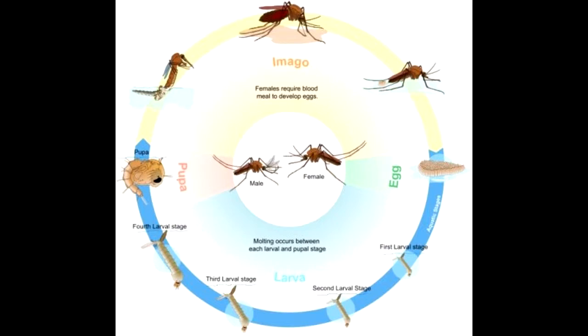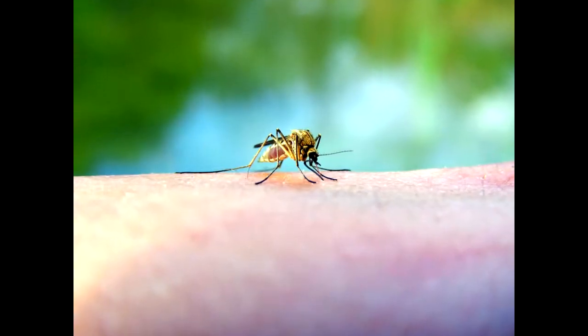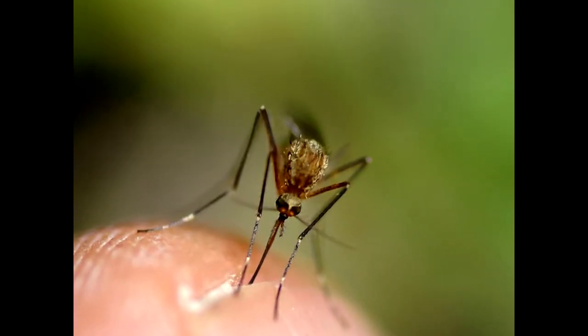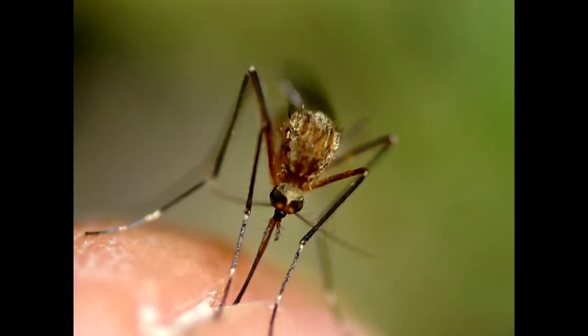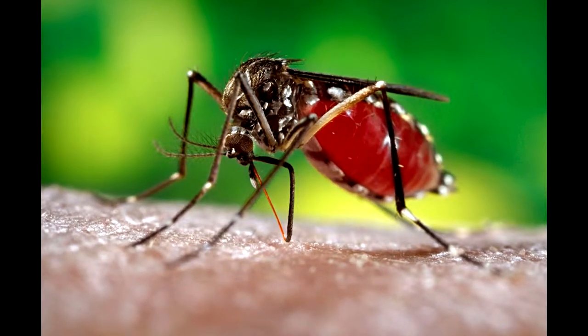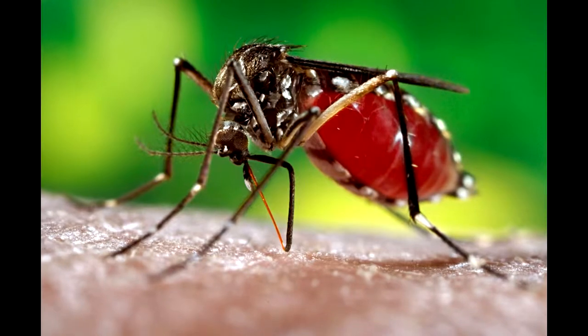This is in contrast to dengue, for which only humans and primates are hosts. The disease shares some clinical signs with dengue and can be misdiagnosed in areas where dengue is common. The proximity of mosquito breeding sites to human habitation is a significant risk factor. These mosquitoes can be found biting throughout daylight hours, with peaks in early morning and late afternoon. Both species bite outdoors, but Aedes aegypti will also readily feed indoors.